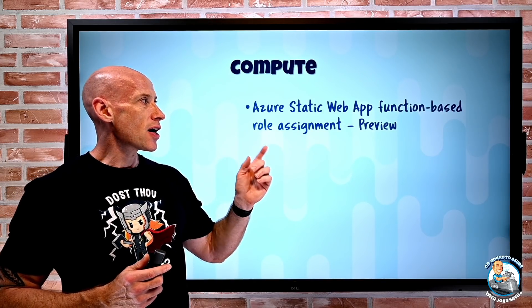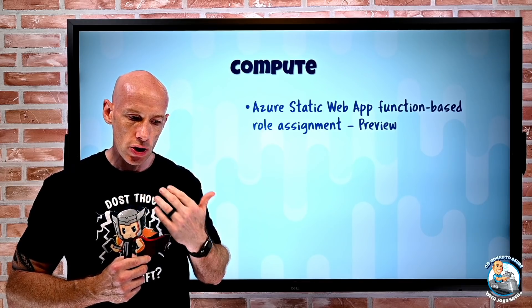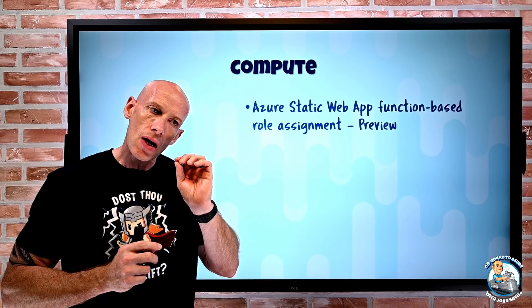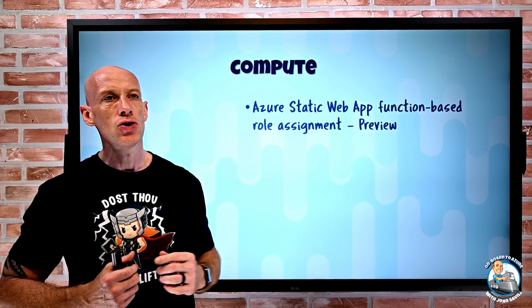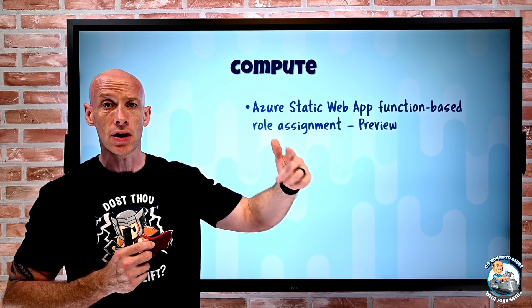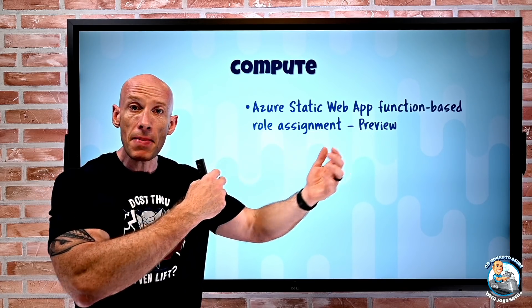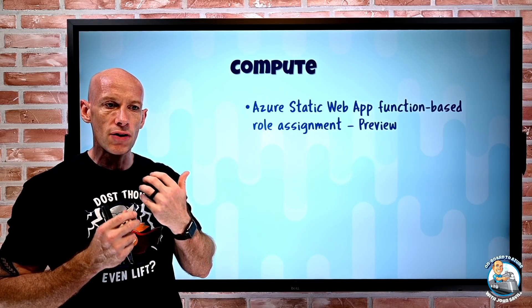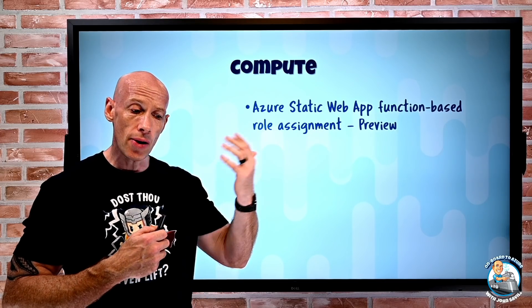Azure Static Web Apps now has function-based role assignment. Currently there's an invitation system for assigning roles to users based on the authentication provider — be it Azure AD, GitHub, or whatever — stored in the JSON file. What this new capability enables is at the point of authentication it actually calls an Azure Function, which is a serverless piece of code. That code can do anything — look up a database that maps roles, do an API call — and it will then return the roles for the identity. So rather than having them statically assigned in a JSON file, you can now use a function to dynamically determine what the role should be.